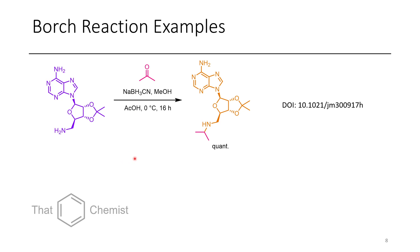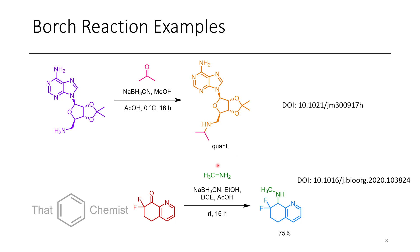Some examples of this type of reduction include the reductive amination of a nucleoside derivative where an NH2 is converted into an isopropylamine — a secondary amine — with quantitative conversion reported. In another case, a pyridine-containing compound is converted to the methylamine secondary amine product.